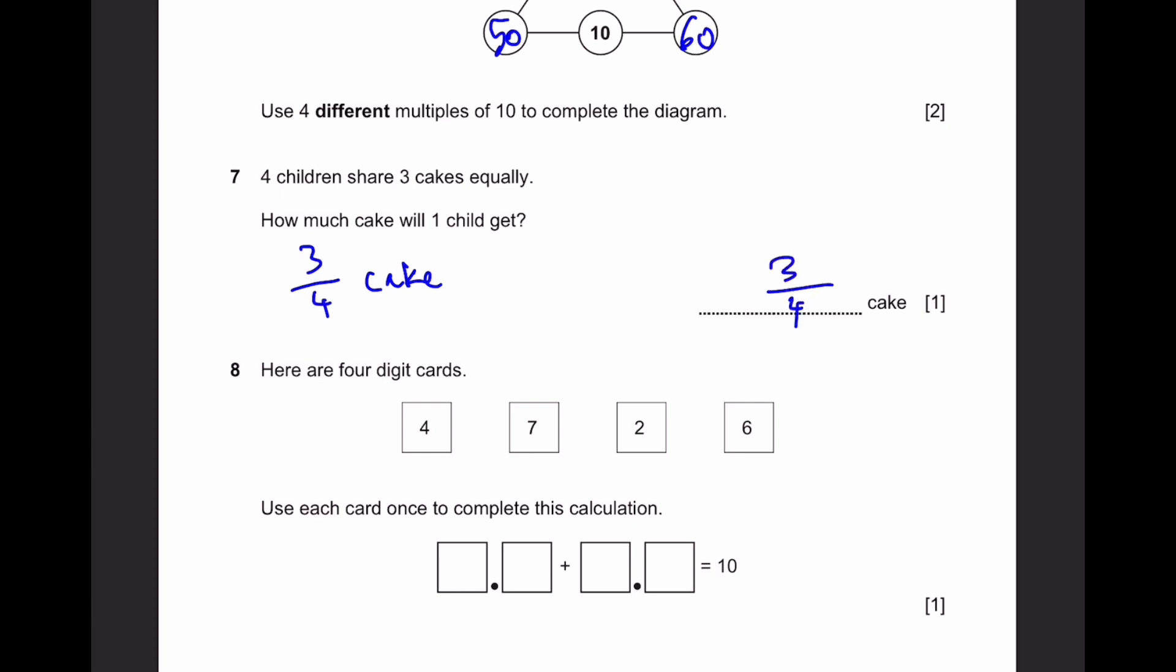Question 8. Here are 4 digit cards. Use each card once to complete the calculation. Blank point blank plus blank point blank equals 10. Something plus something must be equal to 0. Because if you have two decimal numbers, and then all of a sudden when we add them together, we get a whole number. That means the decimal digits must add up to 10. So that means it'll be 0.4 or 0.6. And you can put the other two wherever you want. 7.4 and 2.6. You can write 2.4 and 7.6. It doesn't matter. One of these is correct.